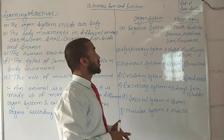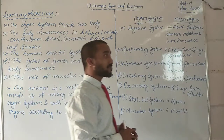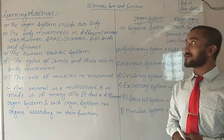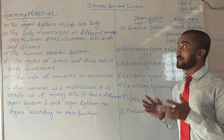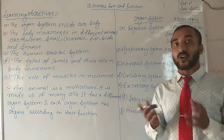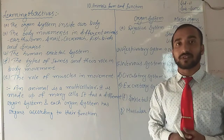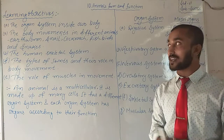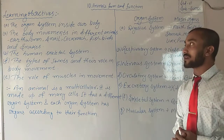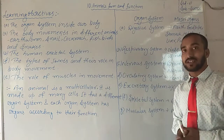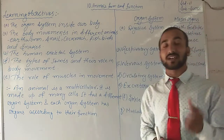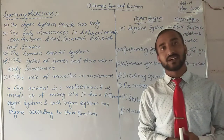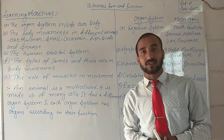In this chapter — animals, form and function — first of all, let's look at your learning objectives: what output will come after studying this chapter. Before proceeding, you must take out your textbook, notes copy, and get ready for today's class.